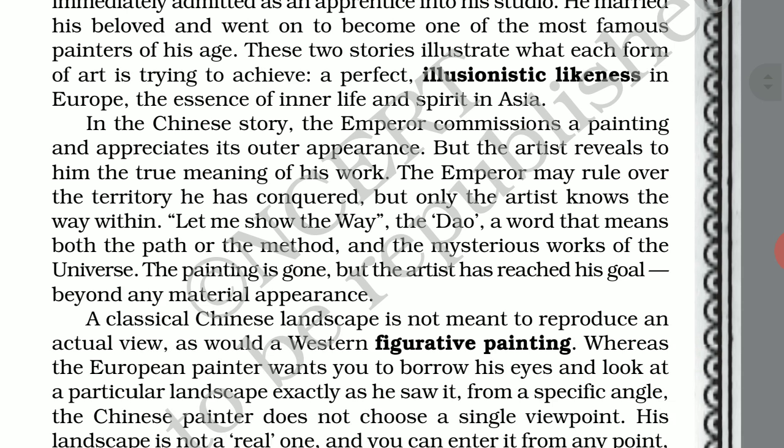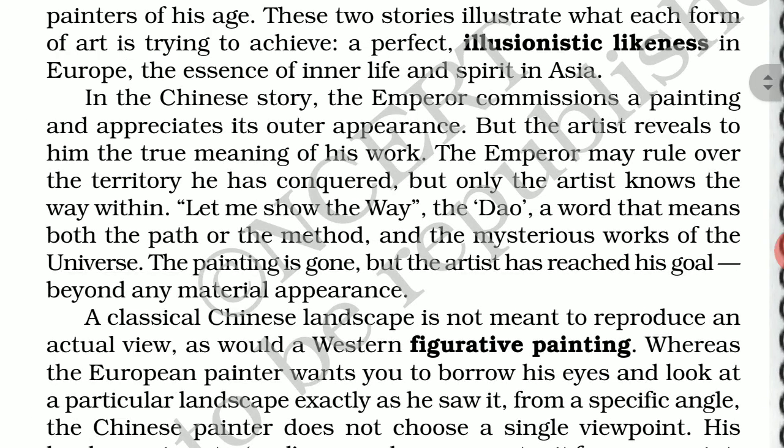In the Chinese story, the emperor commissions a painting and appreciates its outer appearance, but the artist reveals to him the true meaning of his work. The emperor bears rule over the territory he has conquered — conquered means won. But only the artist knows the way within. 'Let me show the way.' The Tao — a word that means both the path and the method, the mysterious work of the universe — the painting is gone, but the artist has reached his goal beyond any material appearance.